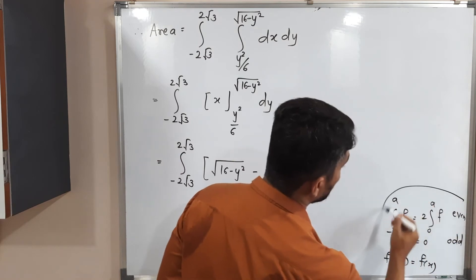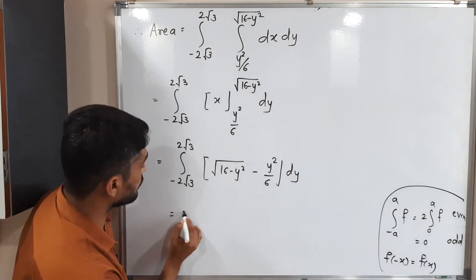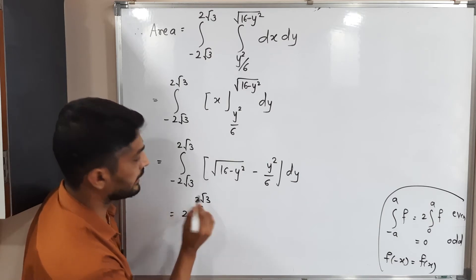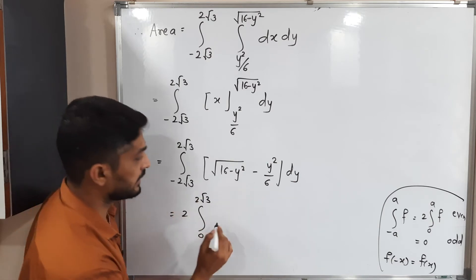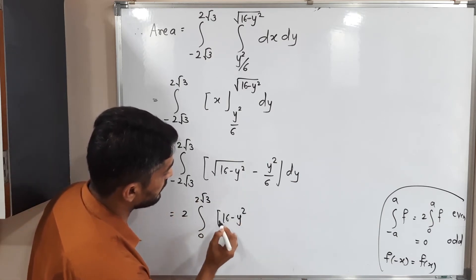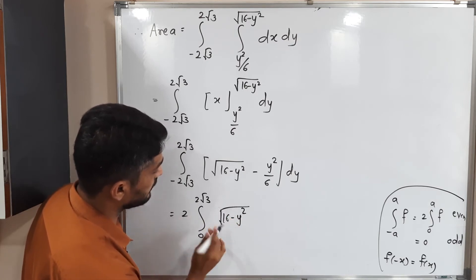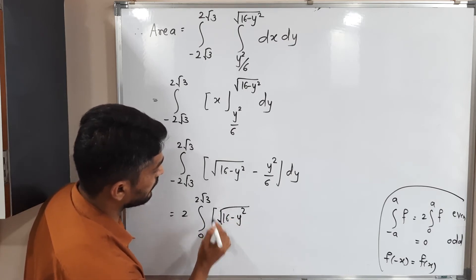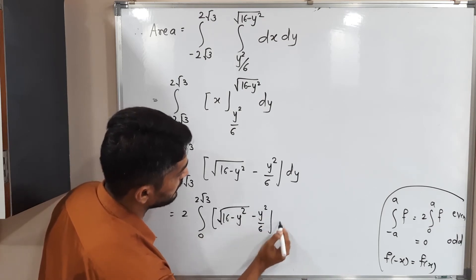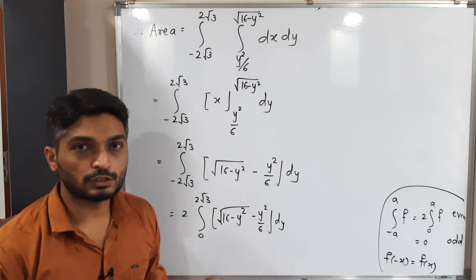Since the function is even, we write 2∫ from 0 to 2√3 [√(16-y²) - y²/6] dy.